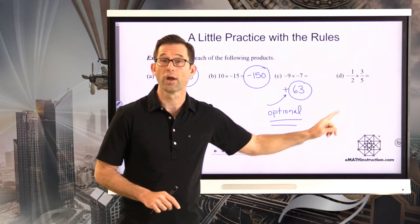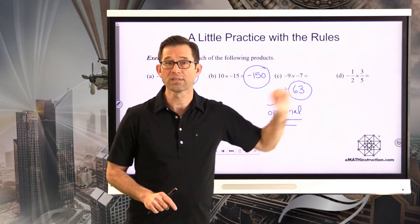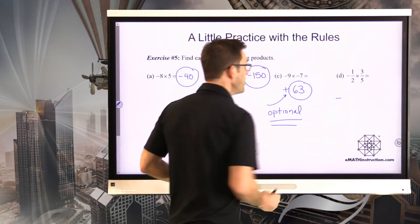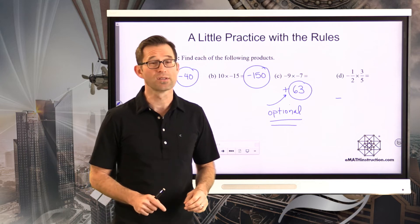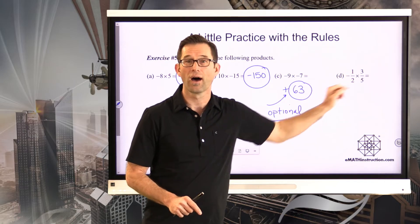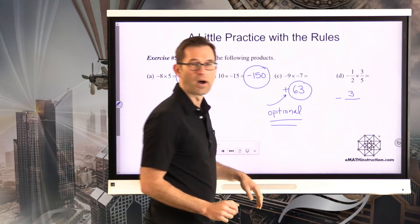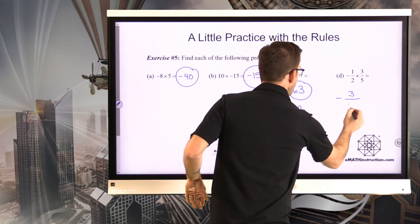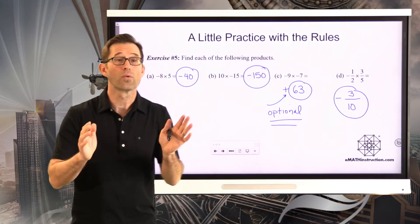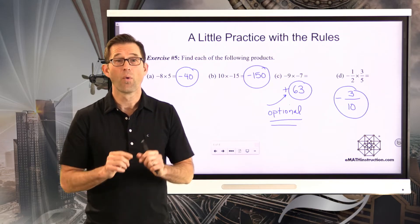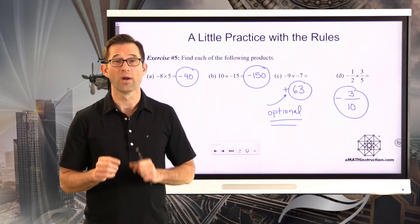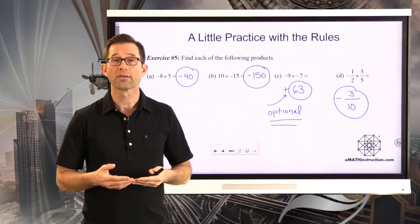Letter D involves fractions: negative one-half times positive three-fifths. When we have a negative times a positive, the answer is always negative. To multiply fractions, multiply the numerators: 1 times 3 is 3, and the denominators: 2 times 5 is 10, giving negative three-tenths. Same rule applies — if both numbers are positive or both negative, the product is positive; if there's a mix, the product is negative.